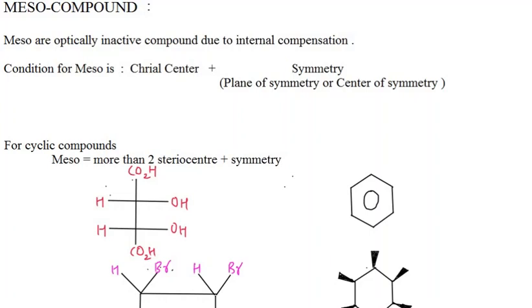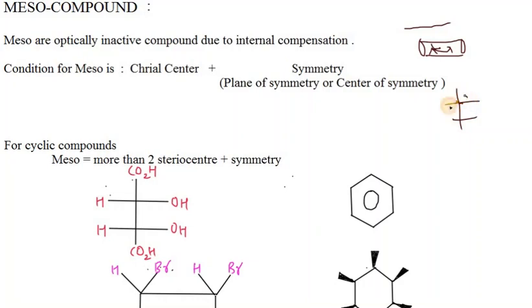Mesocompounds are optically inactive compounds due to internal compensation. When a compound itself is compensating internally, it is known as a mesocompound. In a polarimeter tube, a chiral molecule rotates light. But in a mesocompound, one part of the molecule rotates light in one direction and another part rotates it in the opposite direction, so the overall output is zero degrees rotation. This is called internal compensation — the polarity is compensated internally by the molecule.